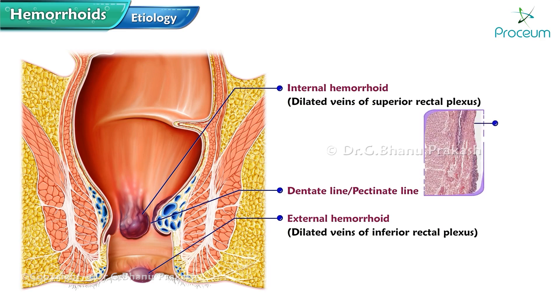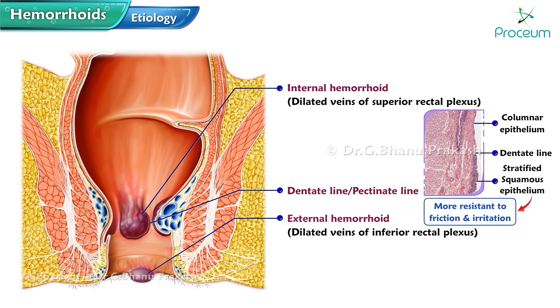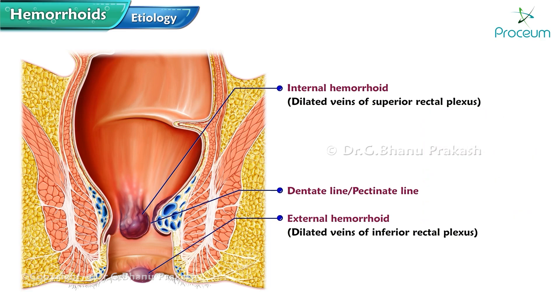The dentate line separates two different types of epithelium. Above the dentate line, the epithelium is columnar, resembling the lining of the rectum. Below the dentate line, the epithelium transitions to stratified squamous epithelium, which is more resistant to friction and irritation.